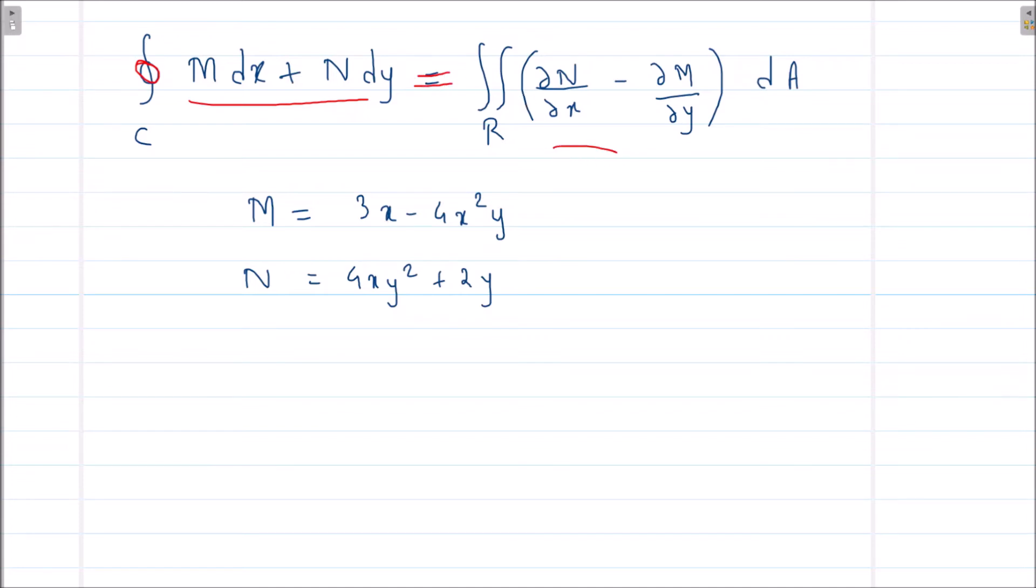The integrand becomes ∂N/∂x minus ∂M/∂y dA. What is this? M is the coefficient of dx and N is the coefficient of dy. So comparing with the given question, this is our M and this is our N. So now we find ∂N/∂x and ∂M/∂y.